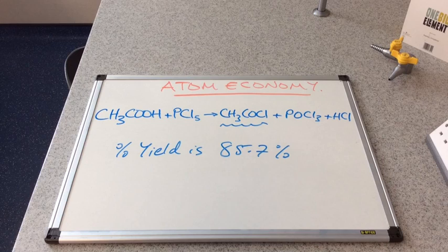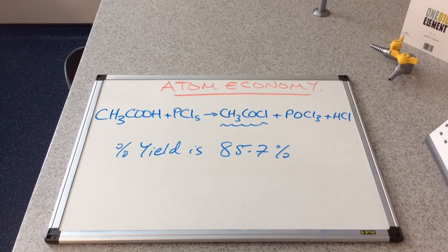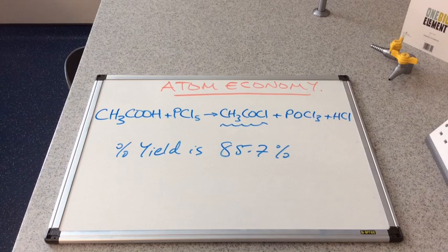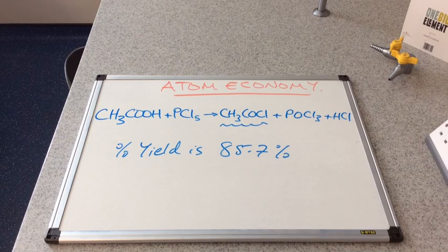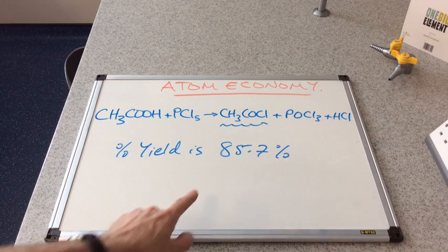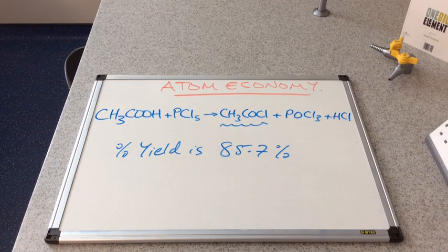So we're using valuable finite fossil fuels to fuel the process to treat the waste. And we probably need to buy in extra chemicals to treat the waste chemicals. So those extra chemicals need to be bought, they need to be made, there's energy going to be used to do that. And you can see that suddenly this brilliant 85.7% isn't all that great after all.